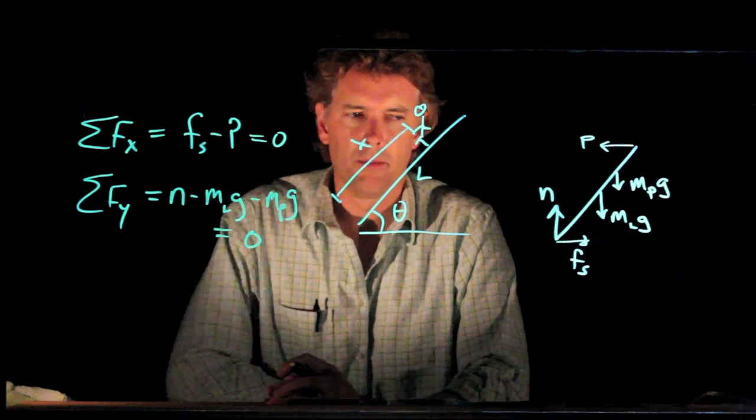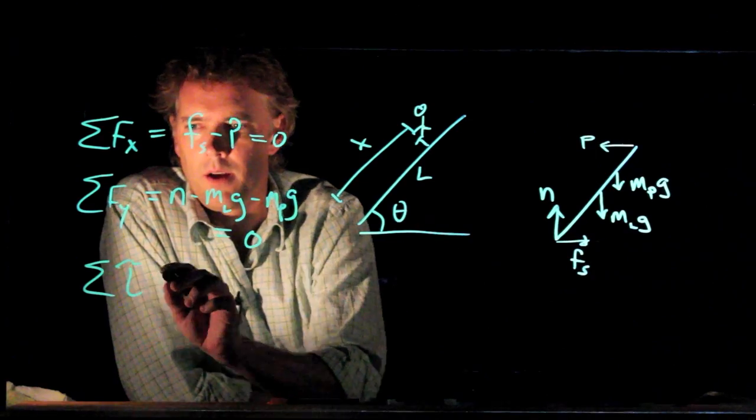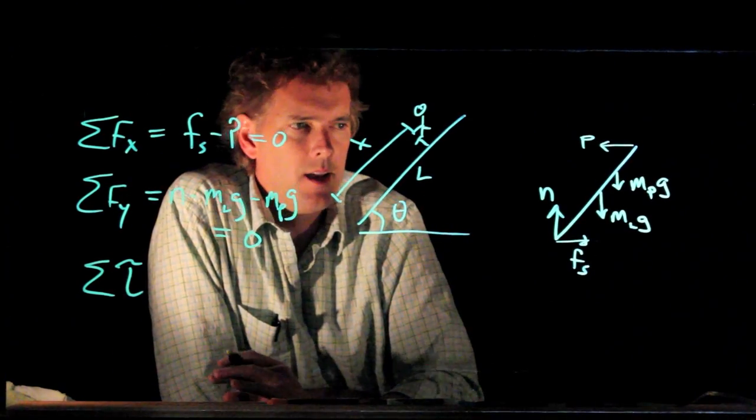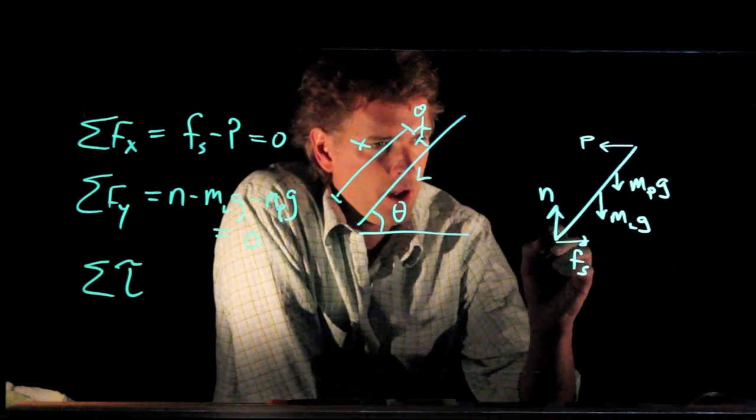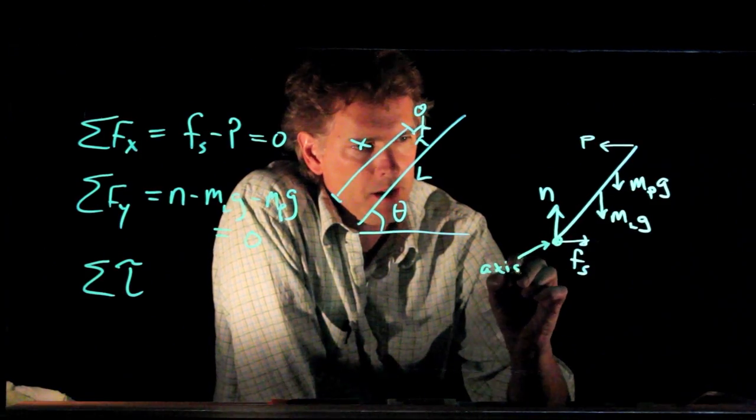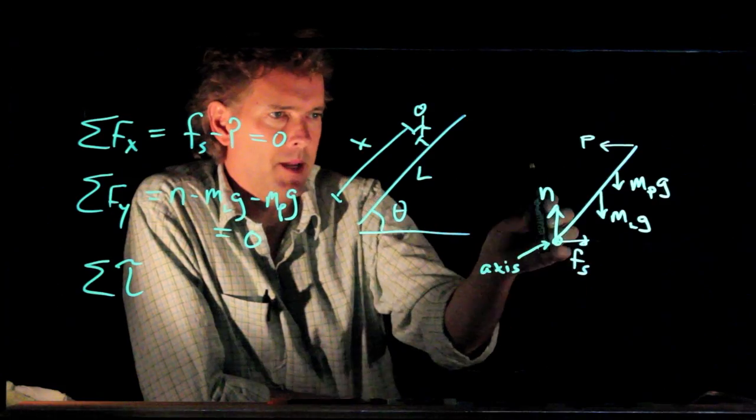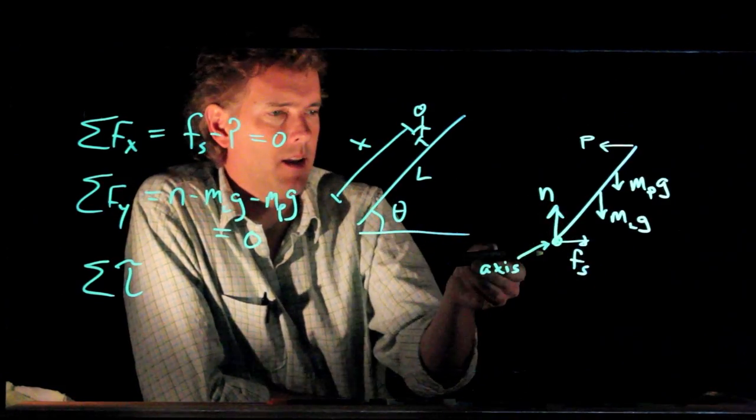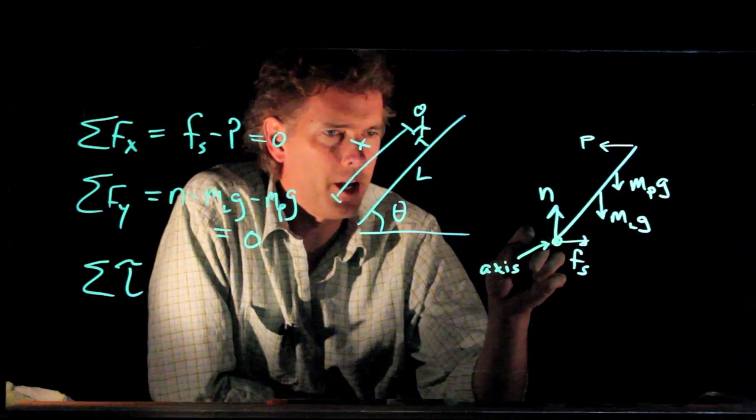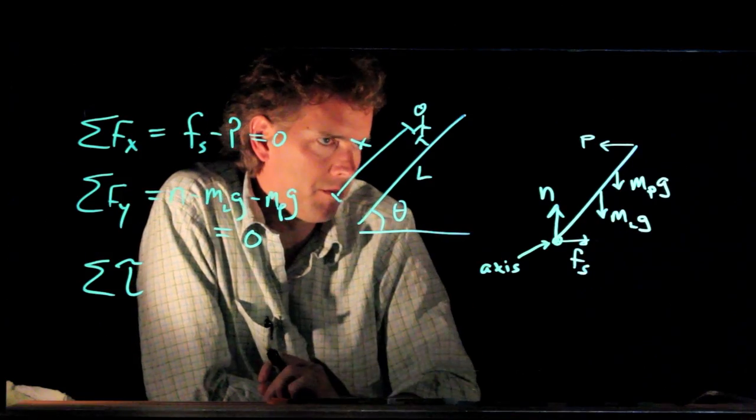The hard part of the problem is identifying all the torques. Now, when you write down sum of the torques, you have to immediately pick an axis of rotation. So let's pick this point right here at the ground as our axis of rotation. By doing that, we immediately eliminate n and F sub s from our torque equation because they don't have any lever arm. They go right through the axis of rotation. But what about all these other forces?